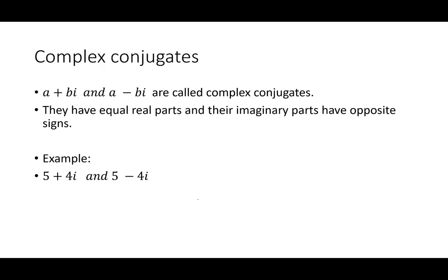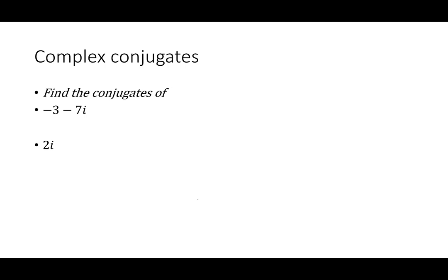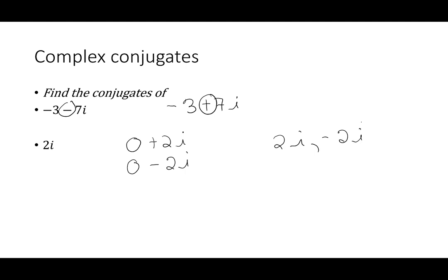An important concept is the complex conjugate. Complex conjugates are a plus bi and a minus bi — the real parts are the same, and the imaginary parts differ only in sign. For example, 5 plus 4i and 5 minus 4i are complex conjugates. To find the conjugate of negative 3 minus 7i, change only the sign between real and imaginary parts: the conjugate is negative 3 plus 7i. For 2i, written as 0 plus 2i, the conjugate is 0 minus 2i, so 2i and negative 2i are complex conjugates.